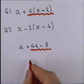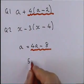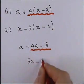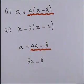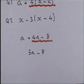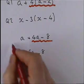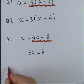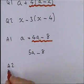So a plus 4a makes 5a, then we take away eight, leaving the answer 5a − 8.